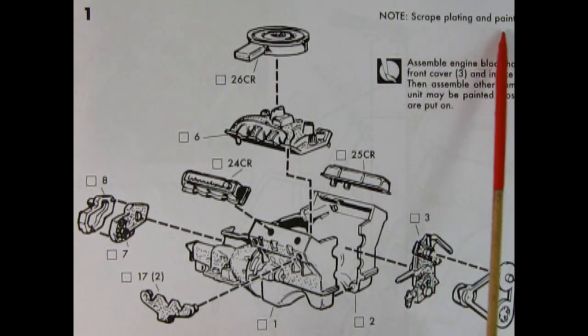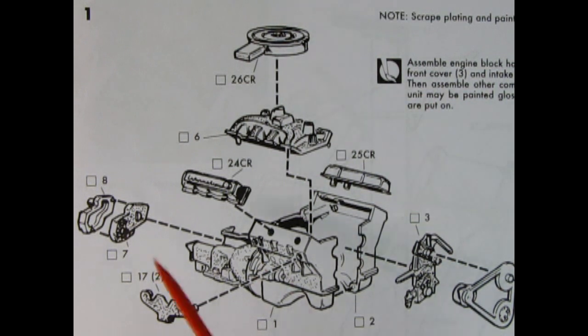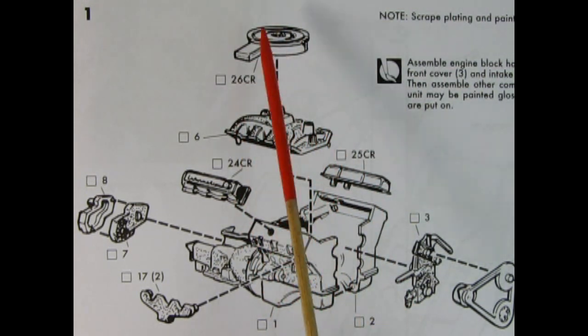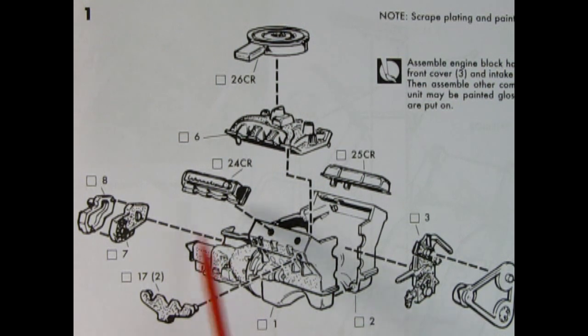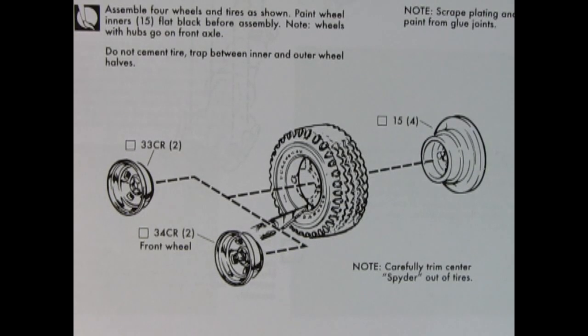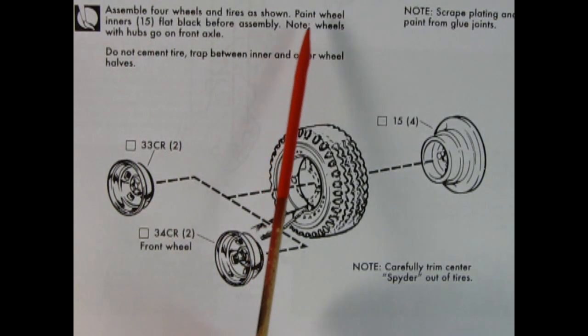Our first step is to build the wonderful engine block. It says to note scrape plating and paint from glue joints. We have a right and left hand side engine block with the oil pan and the transmission as well as the starter motor all molded as one piece. We have left and right valve covers, our intake manifold, our air cleaner, two-piece transfer case for our transmission, right and left hand side exhaust manifolds, the water pump and timing chain, as well as our fan belts and pulleys with the alternator and our fan right in front.